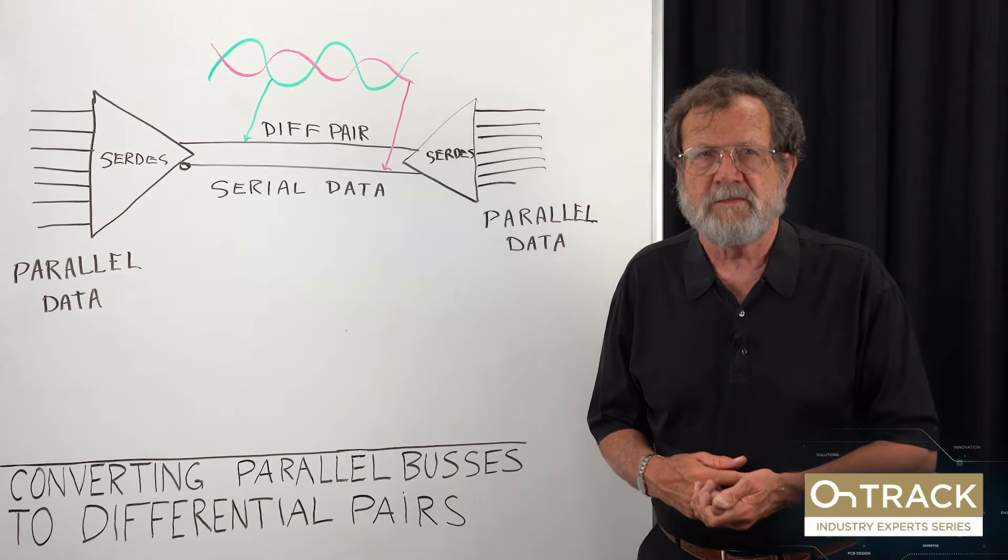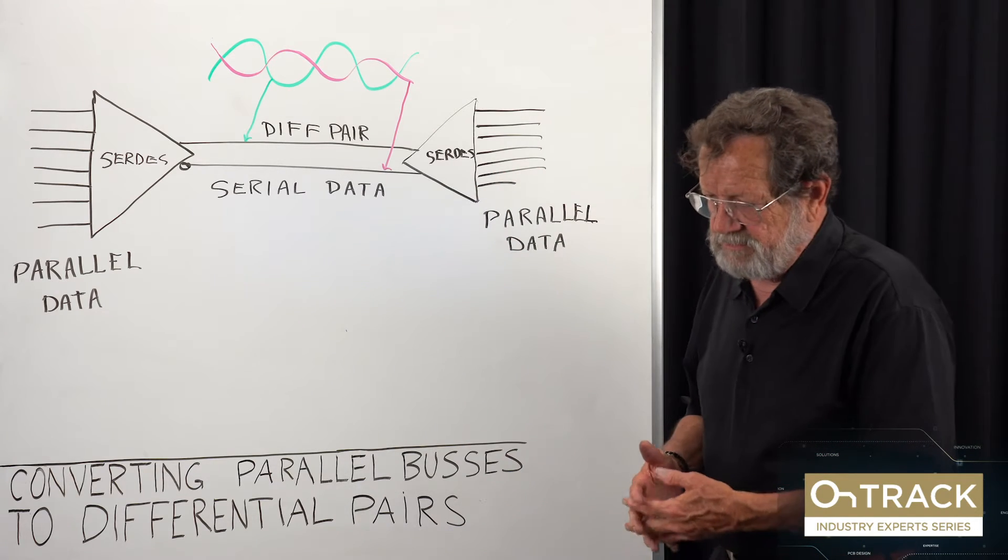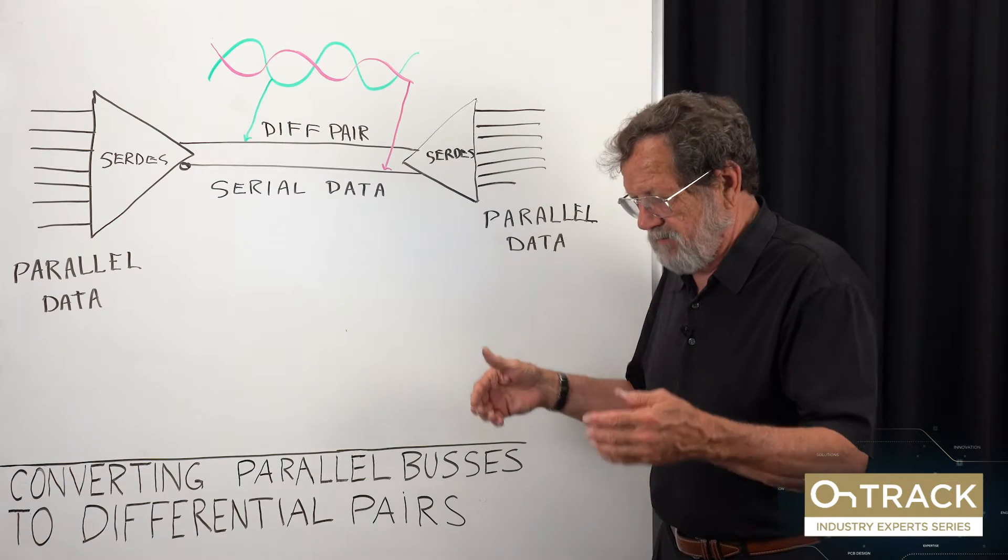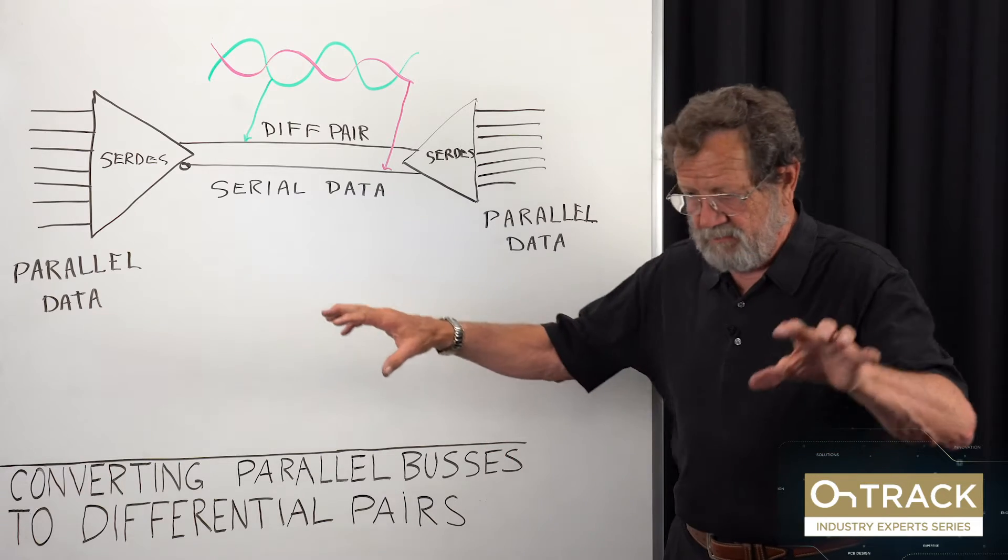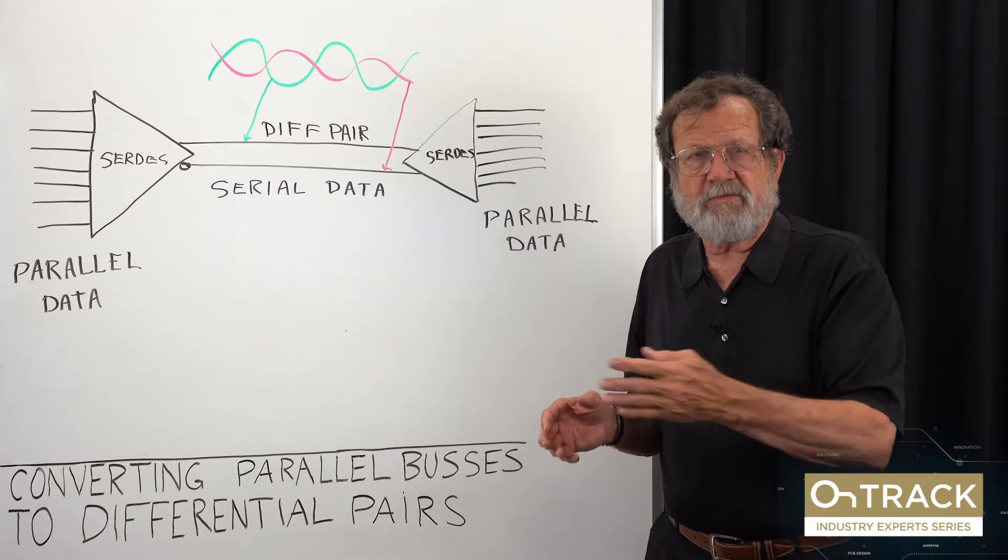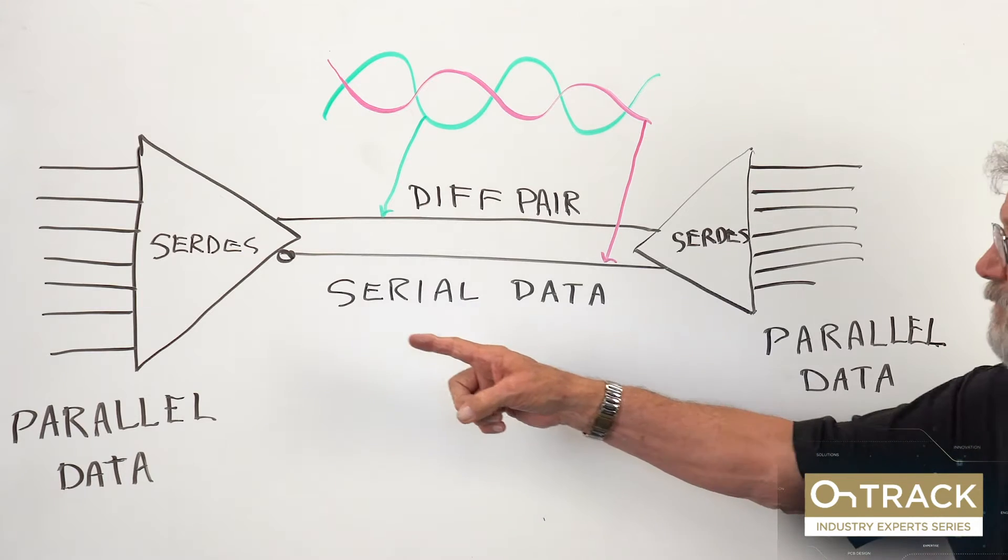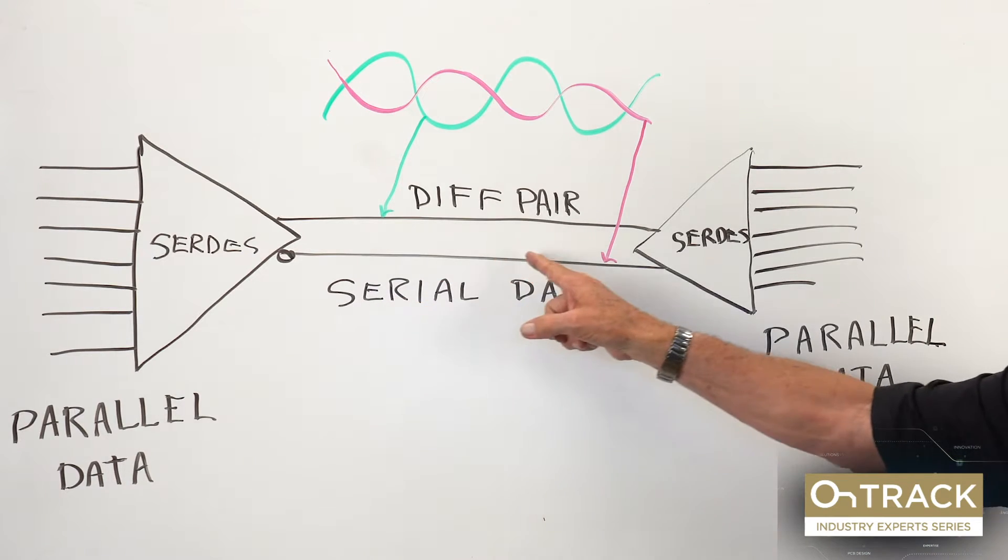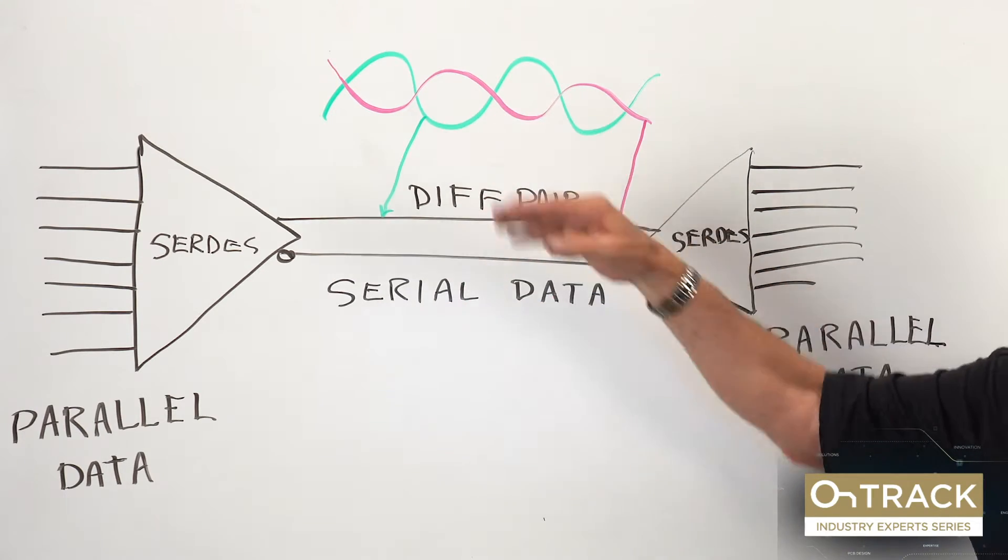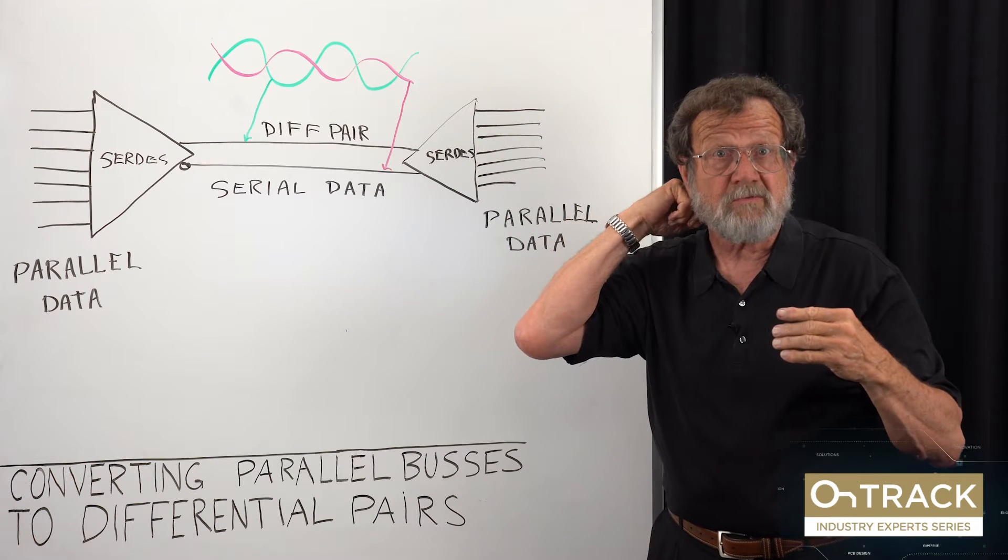The origin of this technology is back in the early days of computing where we had ECL logic and big boxes scattered around the computer room where the logic ground between them was not good enough for single-ended signaling. So we would convert from parallel data to a serial link to parallel at the other end. The benefit was the circuits that do this can tolerate a large amount of ground offset between the two. This is the original reason we did it.